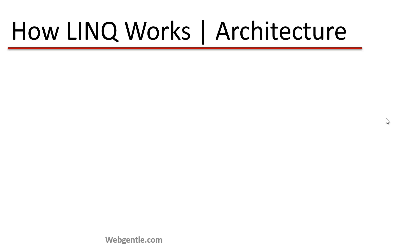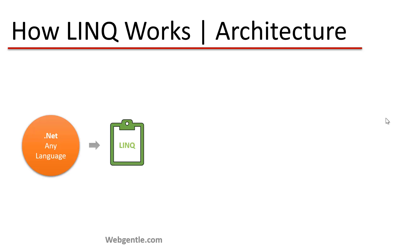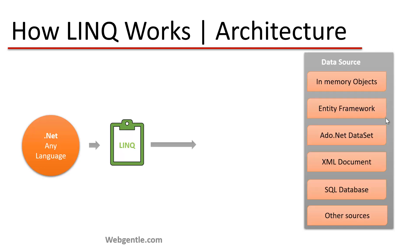This is also called the architecture of LINQ. In .NET, you write code in any programming language — it may be C# or VB.NET. When you write a LINQ query and apply it to a particular data source, that data source may be anything: an in-memory object, a SQL database, an ADO.NET dataset, an XML document, or anything else.